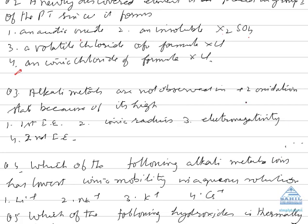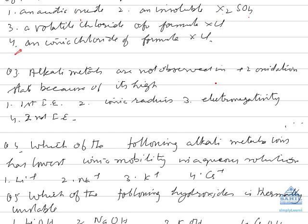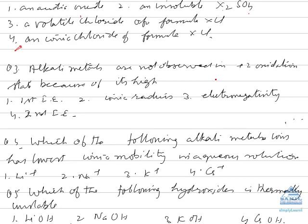Question 3: Alkali metals are not observed in the +2 oxidation state. A +2 oxidation state would require losing two electrons. After losing one electron, the remaining configuration becomes that of a noble gas. As a result, the second ionization energy becomes very high, so they do not show a +2 oxidation state.